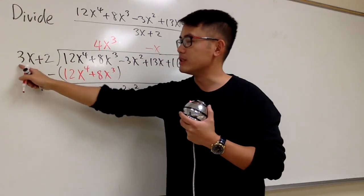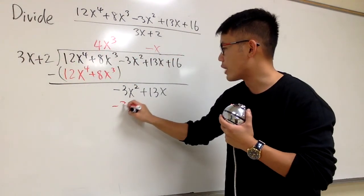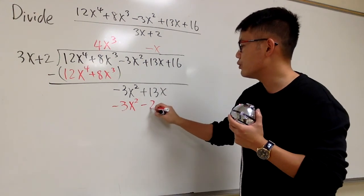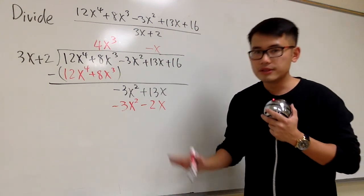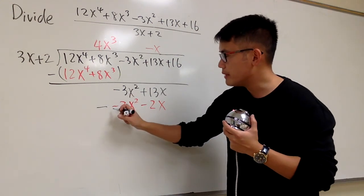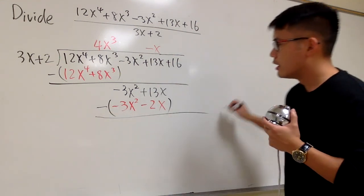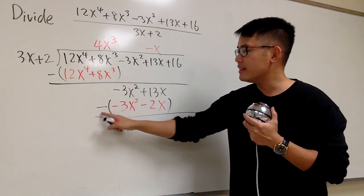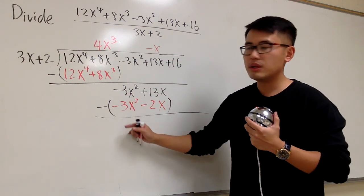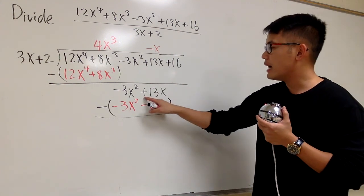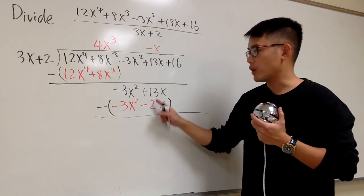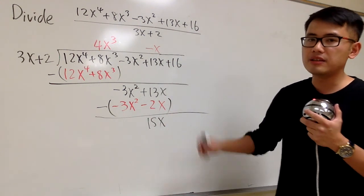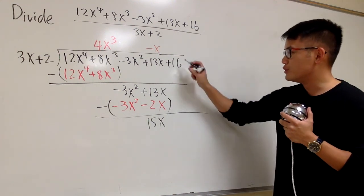Once I put negative x down, I take it and multiply with the divisor. Negative x times 3x gives negative 3x squared. Then negative 1 times 2 gives negative 2, so we have negative 2x. Be sure to put a negative and parentheses, because you subtract all of this. The x squared terms cancel: negative 3 minus negative 3 is zero. Then 13x minus negative 2x is the same as 13 plus 2, which is 15. So we put down 15x, and bring down plus 16.